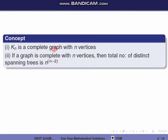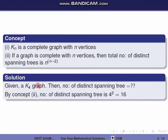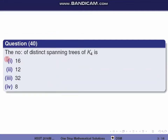The number of distinct spanning trees is given by n^(n-2). K4 is a complete graph with 4 vertices. So the number of distinct spanning trees is 4^(4-2) = 4^2 = 16. The correct option is the first one.